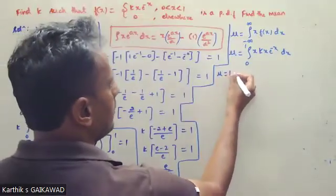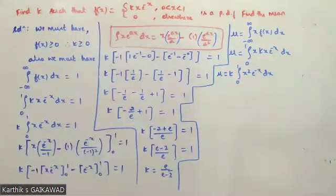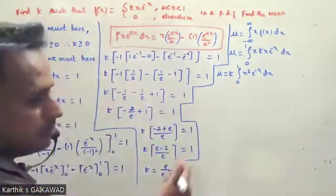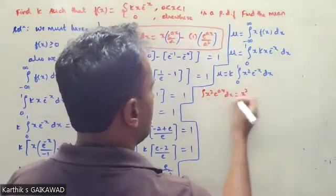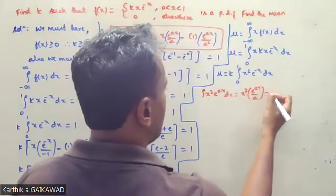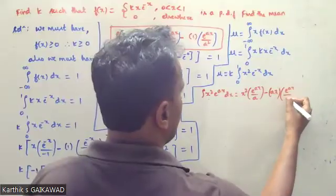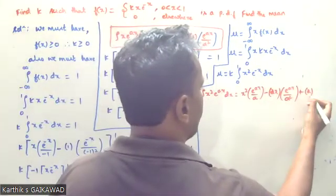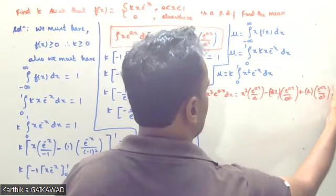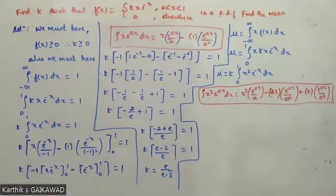The mean mu equals k times the integral from 0 to 1 of x into f(x) dx, which is k times the integral from 0 to 1 of x squared times e^(-x) dx. For the formula of integral of x² times e^(ax) dx, using Bernoulli's rule: x² times e^(ax)/a, minus 2x times e^(ax)/a², plus 2 times e^(ax)/a³.